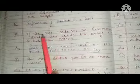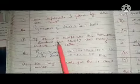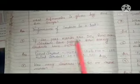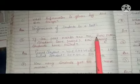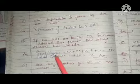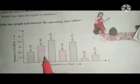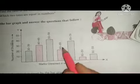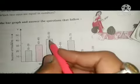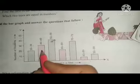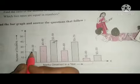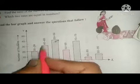Second question: if the passing marks are 50, how many students have passed and how many have failed? The marks ranges shown are 30–39, 40–49, 50–59, and 60–69. Students scoring below 50 have failed. Those in the 30–39 range and the 40–49 range have failed. So students failed: 20 plus 30 equals 50.